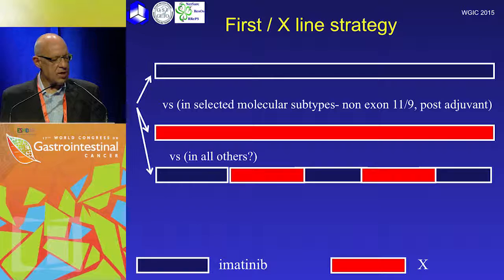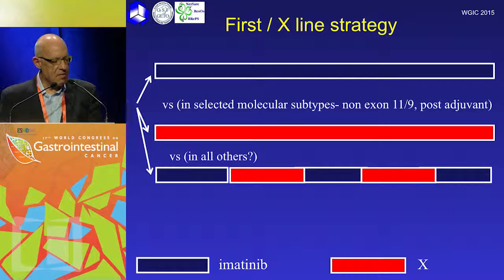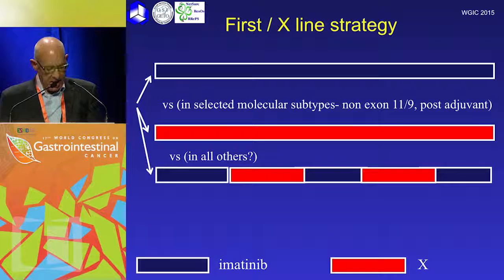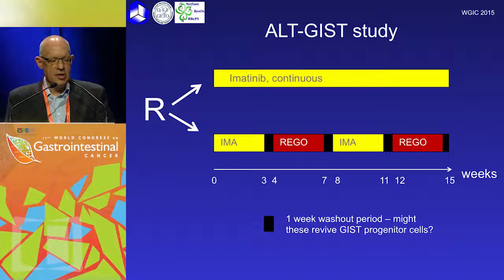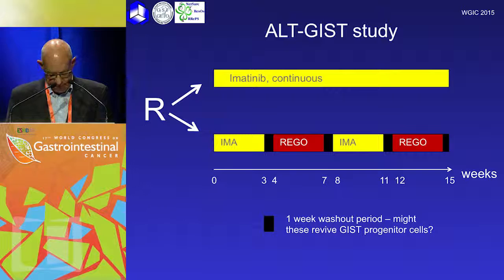There are a number of ongoing studies. One key question is how to bring drugs effective in second and third line forward into earlier lines of therapy. One approach is to compare imatinib against some molecular subtype or bring them in sequence. The Australian group has started a study with Heike Joensuu as principal investigator — a cooperative intergroup study where patients with metastatic GIST are given first-line imatinib or alternatively imatinib alternating with regorafenib, which was shown to be very effective in the third-line setting.